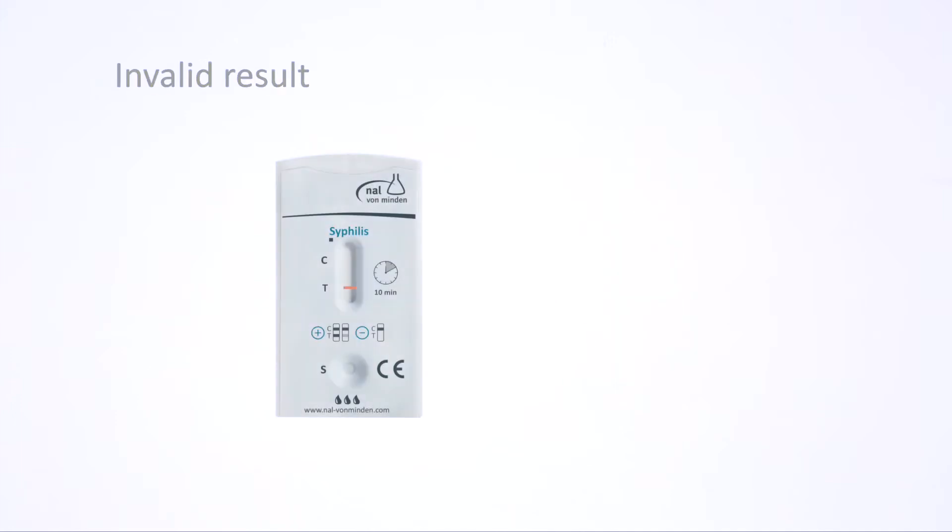The control line signifies that the test has performed correctly and should always be present. If no control line appears, the result is invalid. Repeat the test with a new test device.